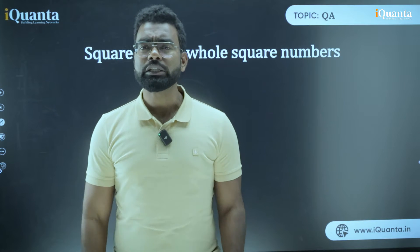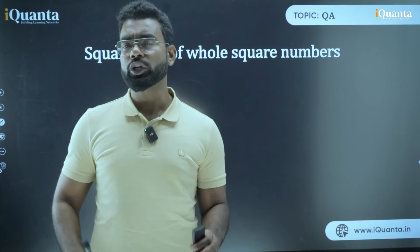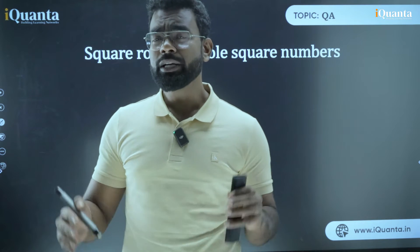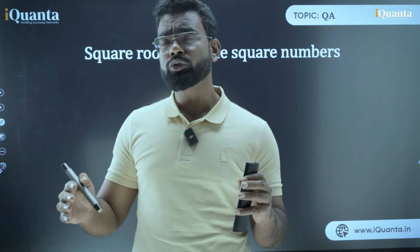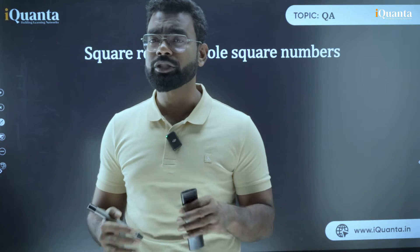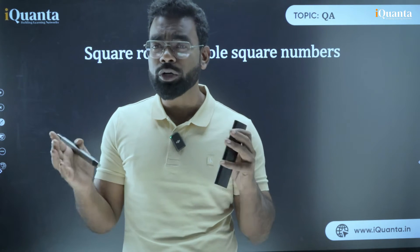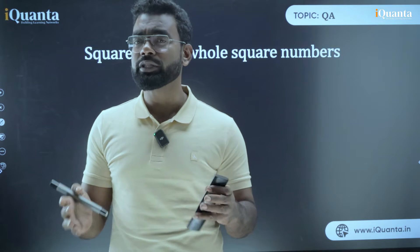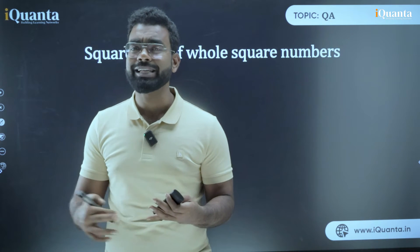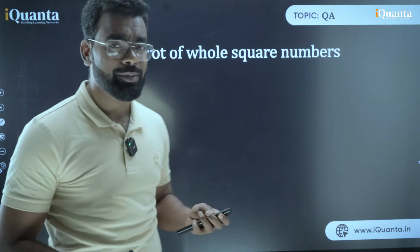Welcome, guys. Now we will learn the square root of whole square numbers and also the cube root of a whole cube number. A whole square number is one which is exactly in the form of a perfect square. A whole cube number is one which is in the form of a perfect cube. In this section we will discuss only those numbers which are either perfect square or perfect cube.